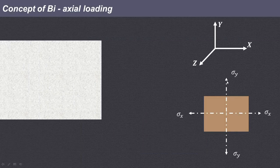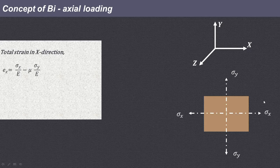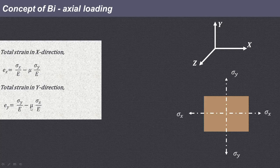For biaxial loading, load acts along two directions — X and Y. The total strain in X direction is ex equals sigma X upon E minus mu times sigma Y upon E. Similarly, total strain in Y direction is ey equals sigma Y upon E minus mu times sigma X upon E. Total strain equals linear strain plus lateral strain, where lateral strain always carries a negative sign. When X is linear, Y is lateral, and vice versa.